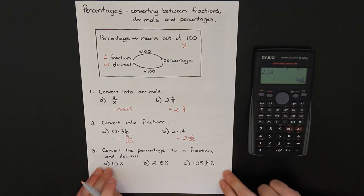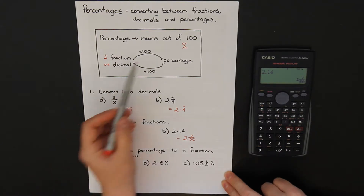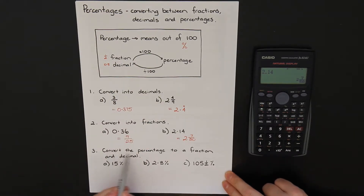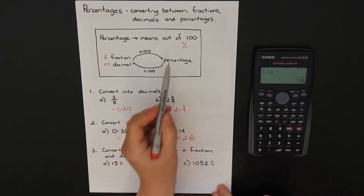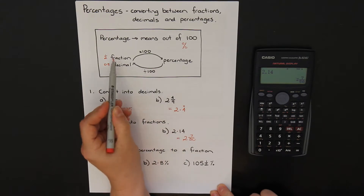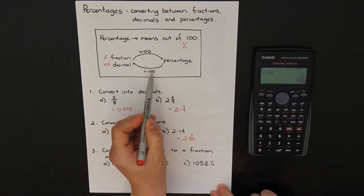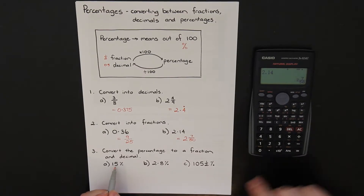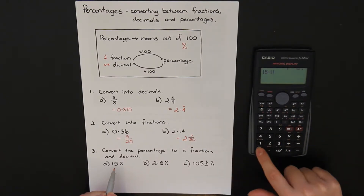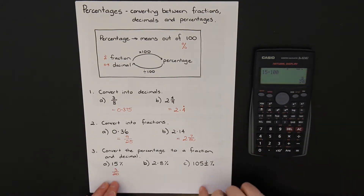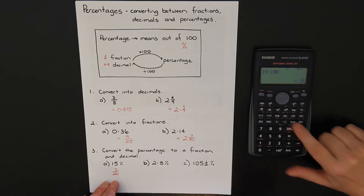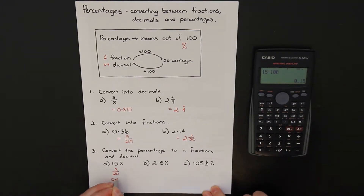That was a little bit of practice changing between fractions and decimals. Now let's use our diagram — we want to convert a percentage to a fraction and a decimal. I have 3 different percentages. Starting with 15%: to change a percentage to a decimal or fraction, I divide by 100. So 15 divided by 100 gives a fraction of 3 over 20. If I want the decimal, I push my button: 0.15.